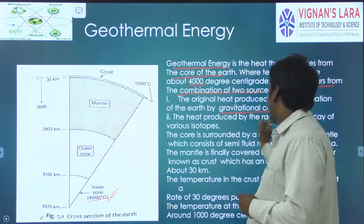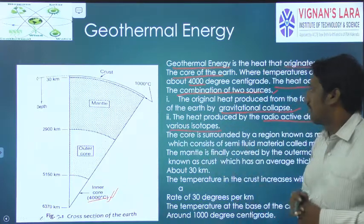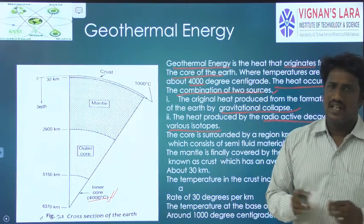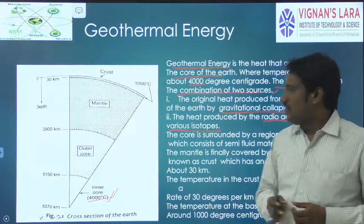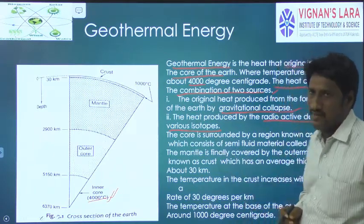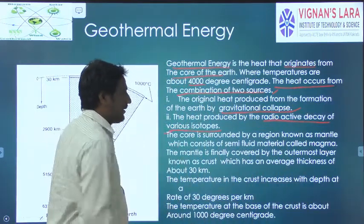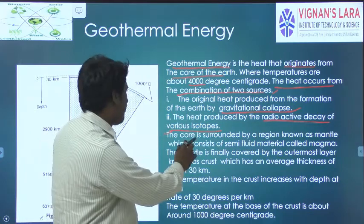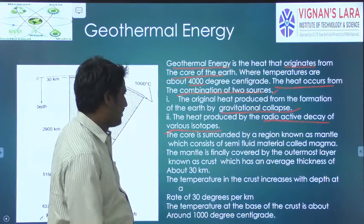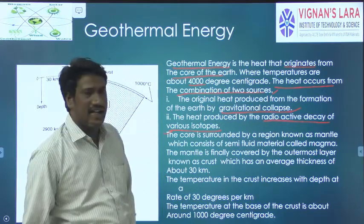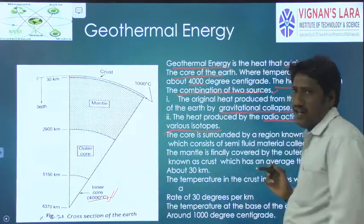The second reason is the heat produced by the radioactive decay of various isotopes. Because of the radioactive decay of many isotopes, a huge amount of temperature is generated. The core is surrounded by a region called the mantle, which consists of semi-fluid material called magma.